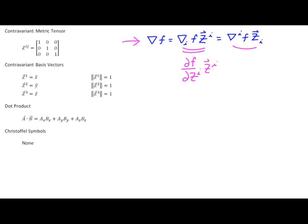Let's run through it. We start with the partial derivative of f with respect to z^1, which is x, times the z^1 basis vector, which is x-hat. Then the partial derivative of f with respect to z^2, which is y, times the z^2 contravariant basis vector, which is y-hat. And then the partial derivative of f with respect to z^3, which is z, times the corresponding contravariant basis vector. And with that, we're done — that is the expression for the gradient in Cartesian coordinates.